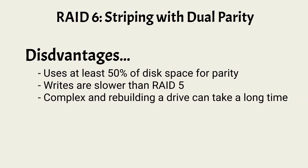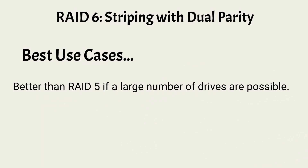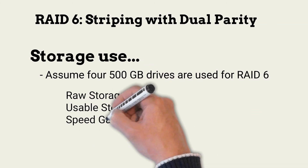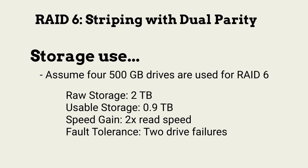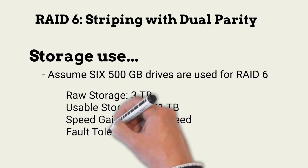RAID 6 uses at least 50% of storage for parity writes, though adding more drives increases the percentage available for storage. RAID 6 is also more complex, making it take much longer to rebuild failed drives. It is a redundancy approach to consider if a large number of drives is possible and write delays are not an issue. Another consideration is the length of time performance might be affected when rebuilding a drive replacement. Although RAID 6 reads are faster than a single drive, they are slower than RAID 5. Adding drives increases both RAID 6 speed and the percentage of drive space available for data storage.